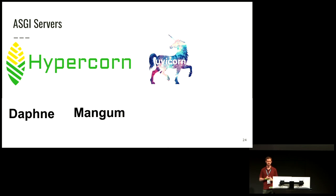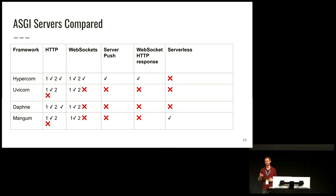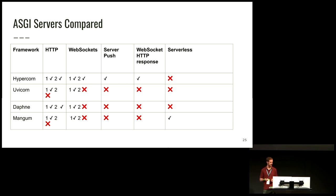Looking at ASGI servers, there are currently four main ones: Hypercorn, UVicorn, Daphne, and Mangum. I have a bias here because I write Hypercorn. Mangum is a serverless option. Daphne is very popular in the Django community. UVicorn is the most performant. In terms of features, there's HTTP/2 support in Hypercorn and Daphne. You can do HTTP/2 WebSockets in Hypercorn. And then server push and HTTP WebSocket responses are also available. Those are the features I'm most interested in.